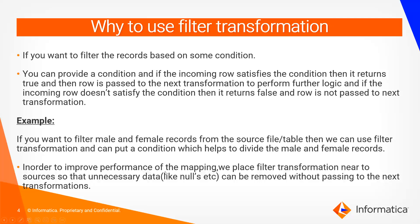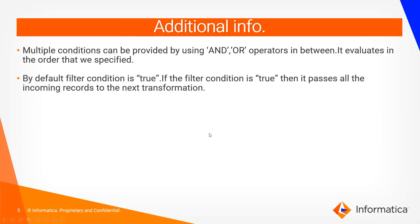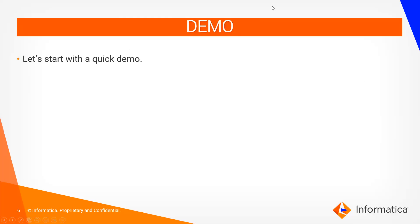To improve performance, we generally place a filter transformation near the source files or source tables, where we can remove null columns or null records so they won't be processed in further transformations. For additional information: multiple conditions can be provided in one filter condition using AND or OR operators, and it evaluates in the order specified. By default, the filter condition is true — so when you create a filter transformation, all records passed in will be output to the next transformation.